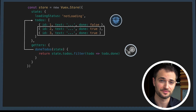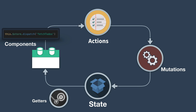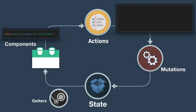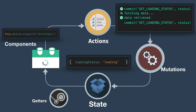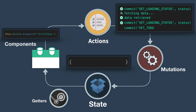Now let's look at Vuex in motion. From our component, we could dispatch the fetchTodos action and that'll run all the code we just looked at. First, it'll commit the setLoadingStatus mutation which updates our loading status state to loading. Then we'll fetch our data, and when that data is retrieved, we'll commit setLoadingStatus again, updating our loading status to not loading. And finally, we'll commit the setTodos mutation which sets the todos state with the API's response.